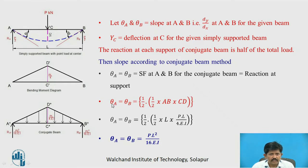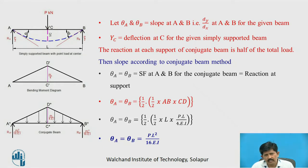Theta A equals theta B equals the shear force at A and B for the conjugate beam, which equals half of the triangular load, that is one-half into one-half into L into PL upon 4EI. Therefore, theta A equals theta B equals PL² upon 16EI.